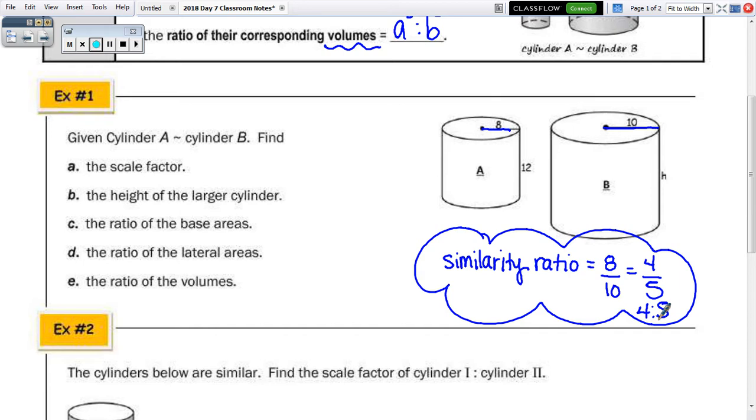So we're given two corresponding radii. So the similarity ratio is 8 to 10, which reduces to 4 fifths. So I'm going to use that reduced fraction for parts A, B, and C. Remember, the scale factor is the reciprocal of the similarity ratio. So the scale factor is 5 to 4, 5 fourths, or you can write it with a colon, or even with the word to. And if you did want to check this, 8 times 5 fourths gives you 40 over 4, which is 10.